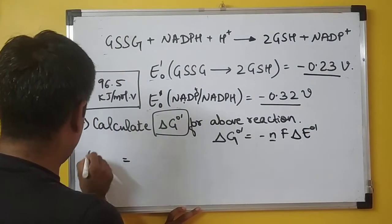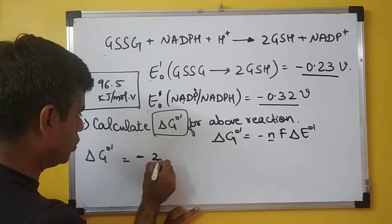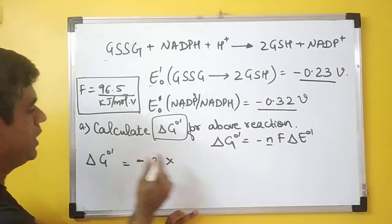N is the number of reducing equivalents. So that is 2 here, so -2 times F, Faraday's constant, given here as 96.5.